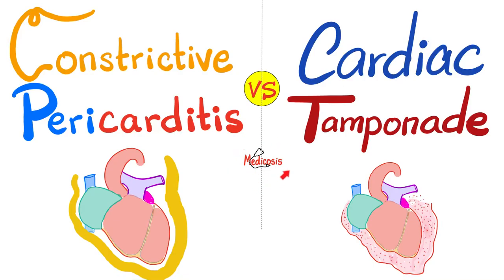Hello wonderful people, it's Medicosis Perfectioneros, where medicine makes perfect sense. Welcome back to my cardiology playlist. In previous videos, we talked about aortic dissection and compared between Stanford type A and Stanford type B — type A is more dangerous, of course. Then we talked about coarctation of the aorta, constrictive pericarditis, and cardiac tamponade. Today let's compare between constrictive pericarditis and cardiac tamponade.